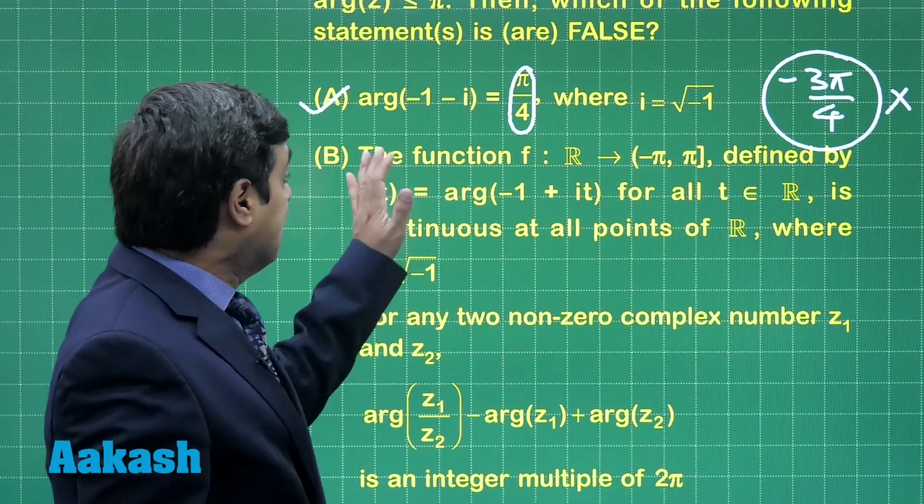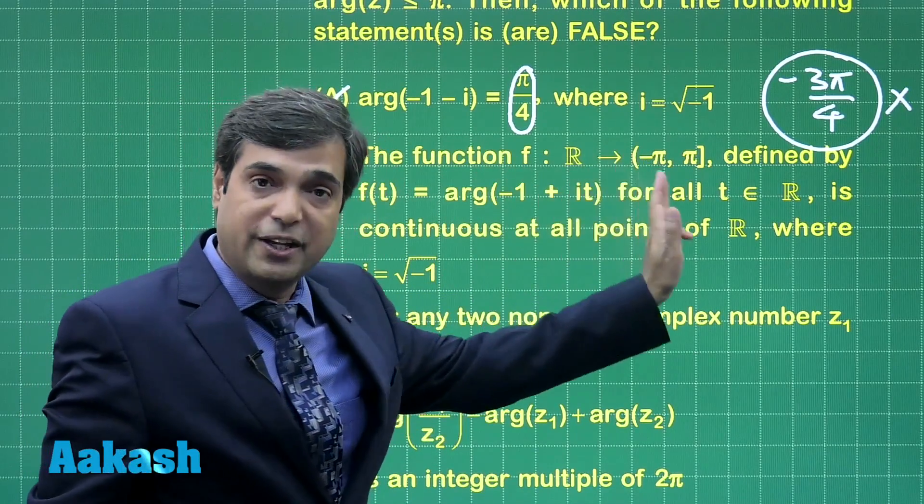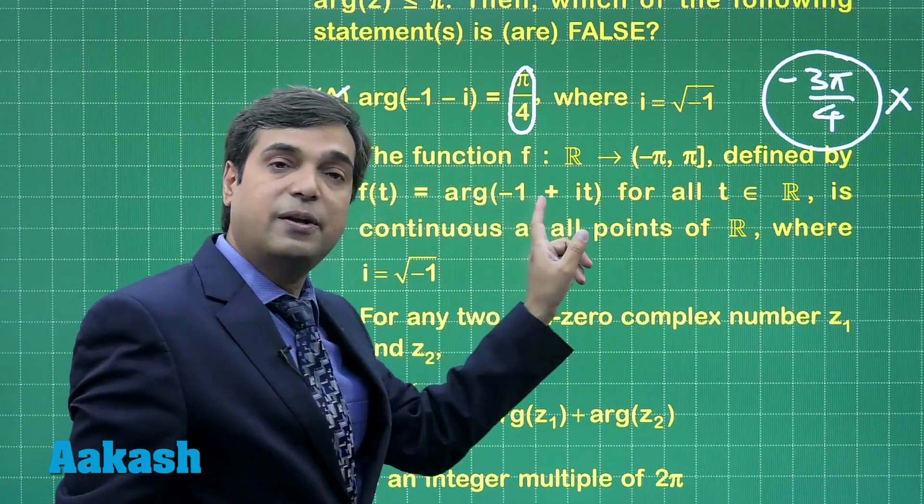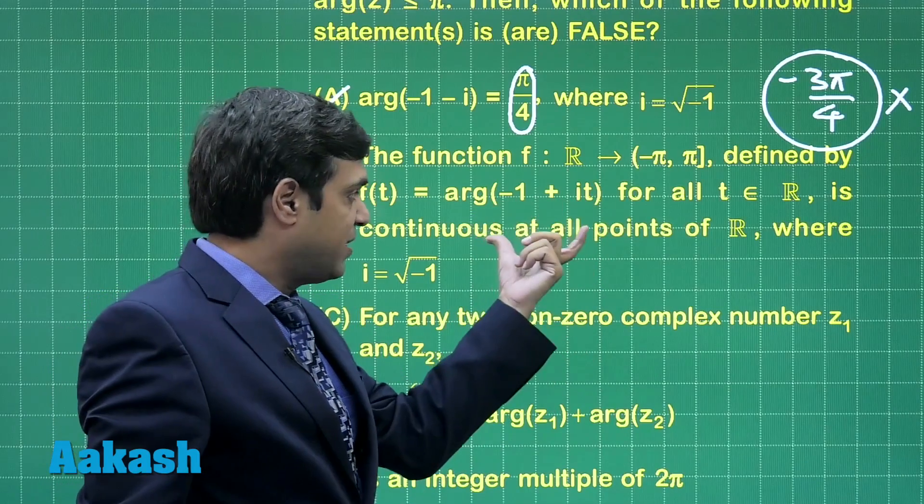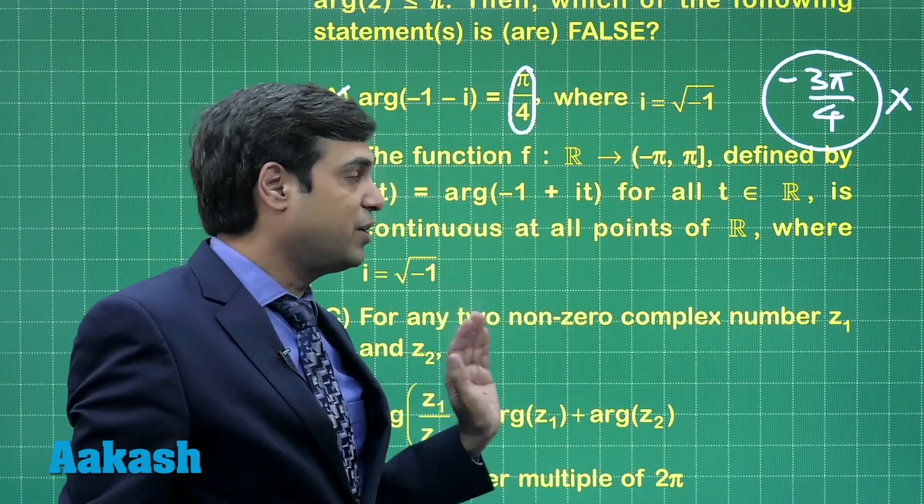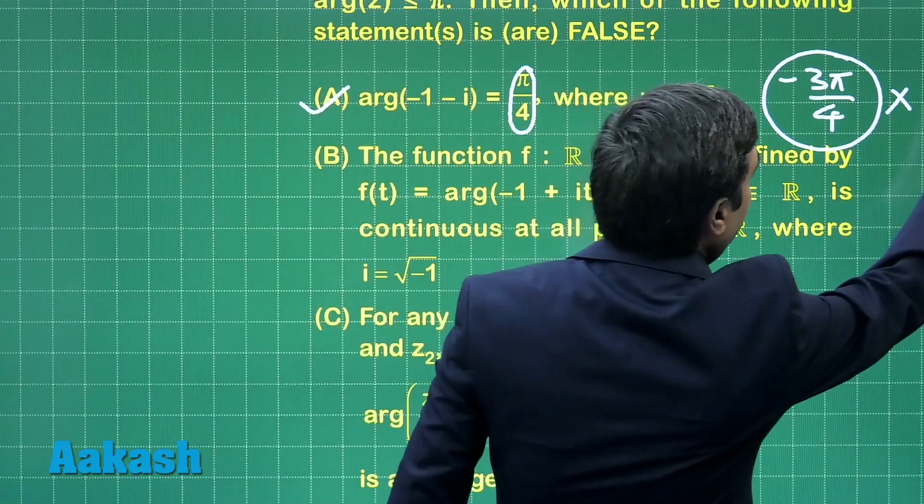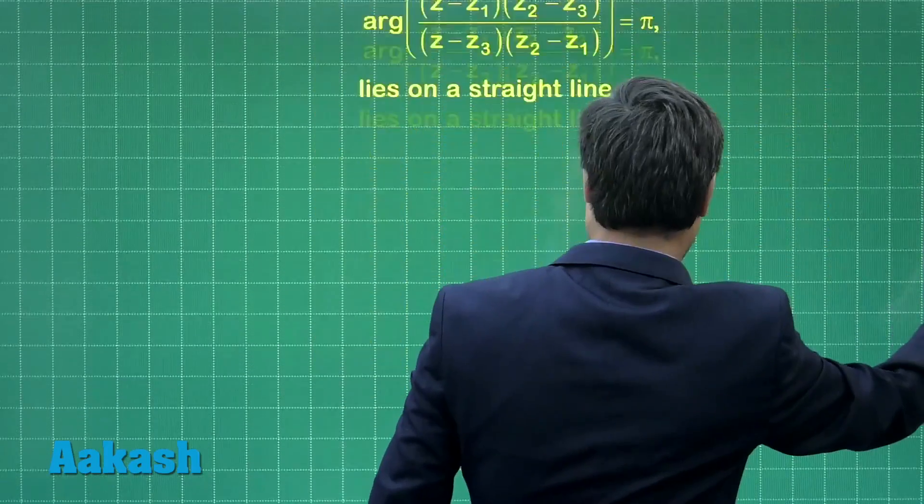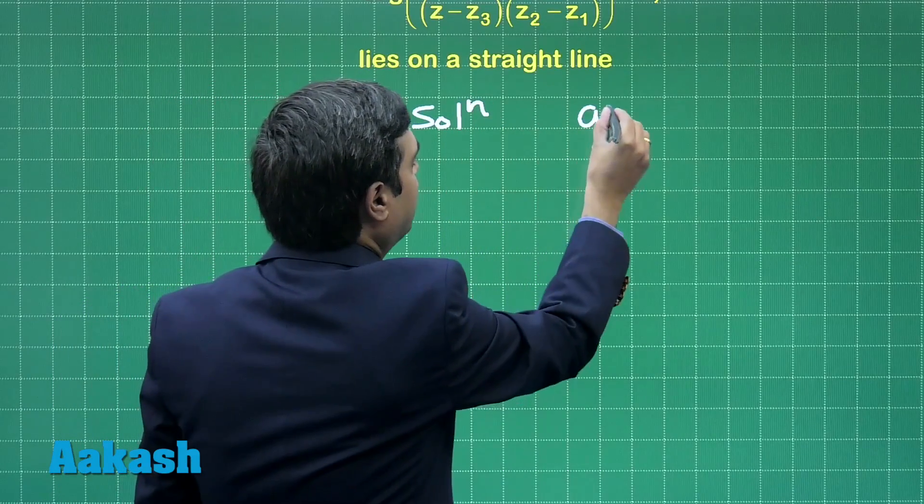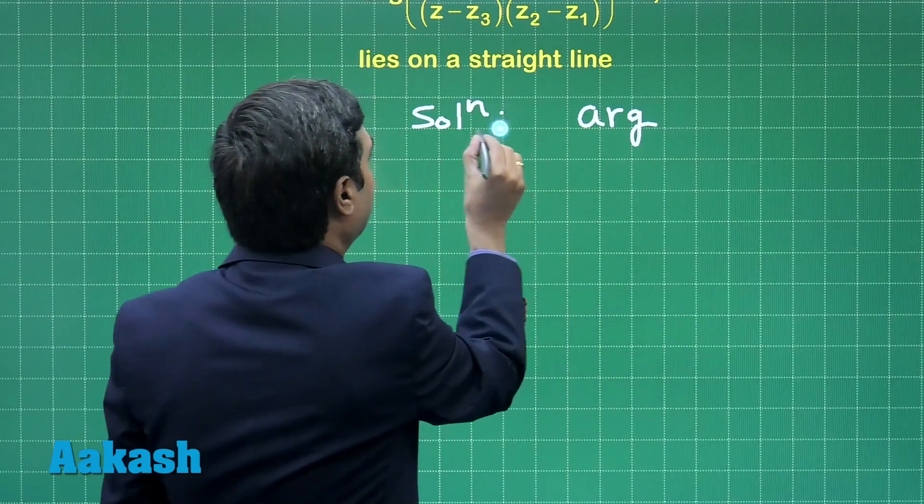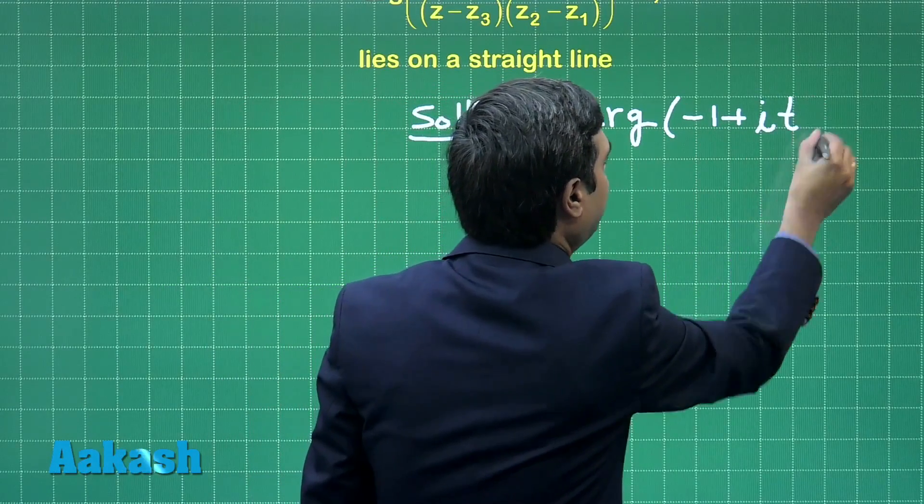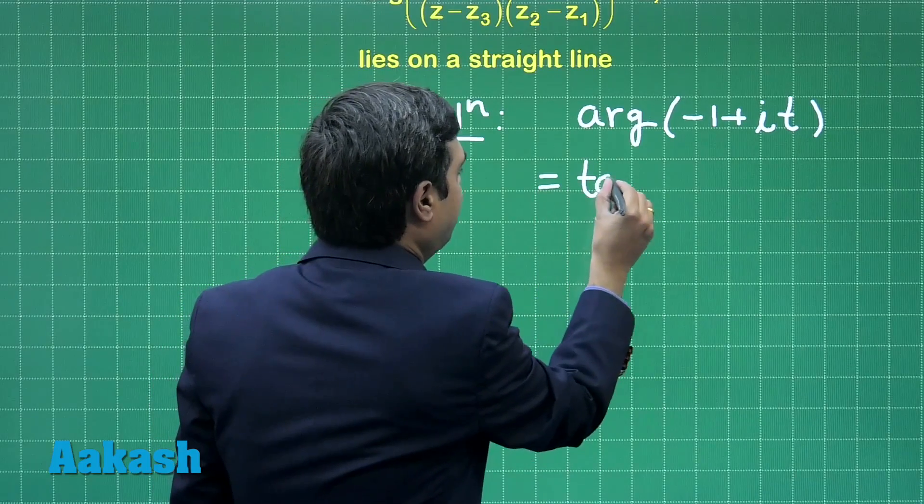Moving to the next one. The function f from R to minus pi to pi defined by f(t) equals argument of minus 1 plus iota t, where t is a real number, is continuous for all points of R. Let us try the second option. How to proceed?